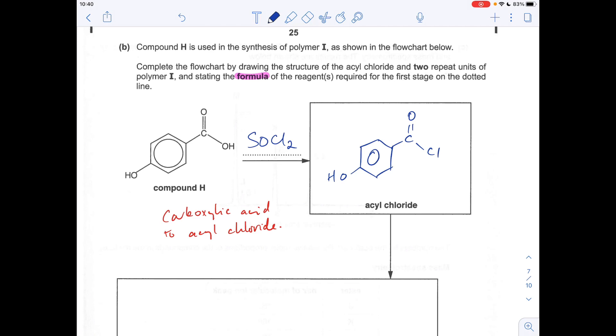And then what we've got to do is polymerize it and show two repeat units of the polymer formed. Okay, so this can polymerize because we've got an OH group and an acyl chloride group. Now acyl chloride can react with alcohols effectively. And so we can polymerize them and we eliminate HCl as a result.